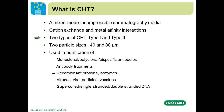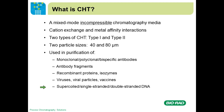We have two types — type 1 and type 2 — and two particle sizes: 40 to 80 micron. CHT is used in the purification of a wide variety of biomolecules. Probably the largest use is in antibodies, either monoclonal, polyclonal, or bispecific. It's also used to purify antibody fragments, common proteins, isozymes, viruses, viral particles, and vaccines. It's particularly good at viral clearance, and you can also use it to separate the various forms of nucleic acids.